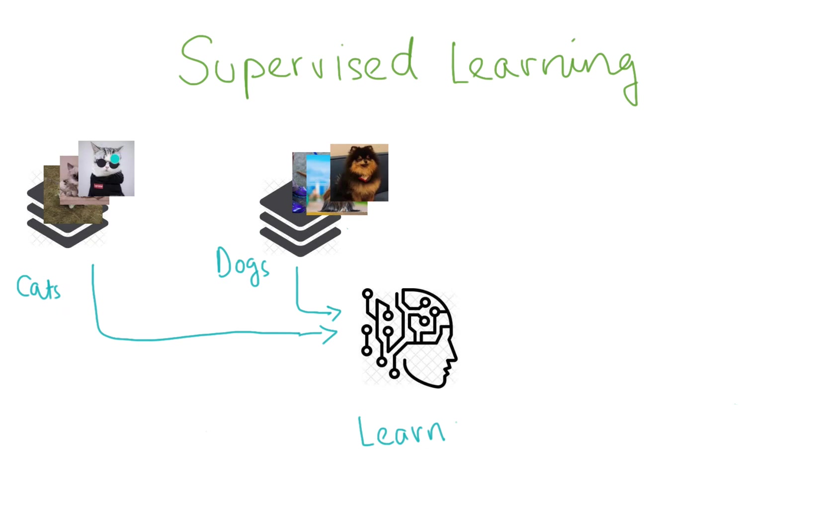These are lots of cat images now and lots of dog images. Why do you need lots of images? Because you're expecting the machine to learn from that many numbers. It's like you're letting the machine practice. And why is it called supervised learning?